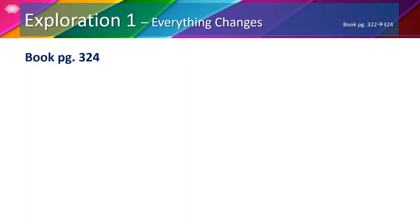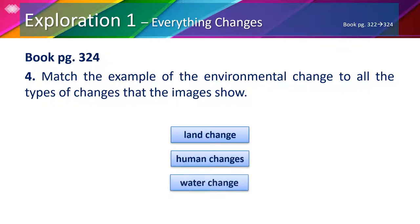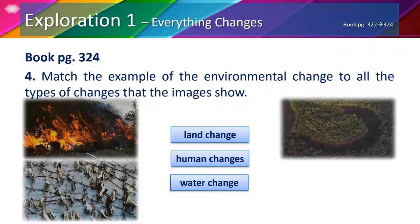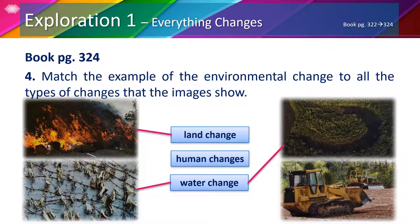On page 324, number 4, we're going to match the examples of environmental change to all the types of changes the images show. The environmental changes are land change, human changes, and water change. The first picture shows lava from a volcano on the road — lava changes the land when it reaches it, so it is a land change. The second picture shows dry or dead plants due to drought or lack of water, so it is a water change. The third picture is of an oxbow lake — when rivers change their course they form small lakes, so this is a water change. The last picture is of a bulldozer that humans use to cut down trees and clear the land, so it is a human change.